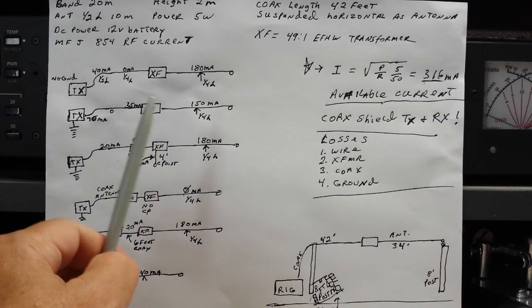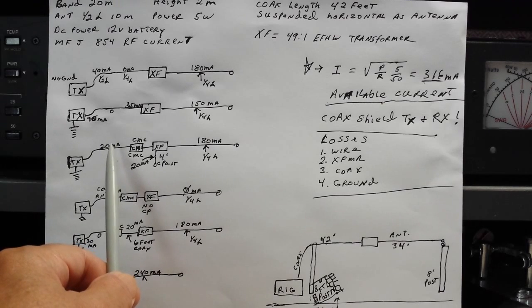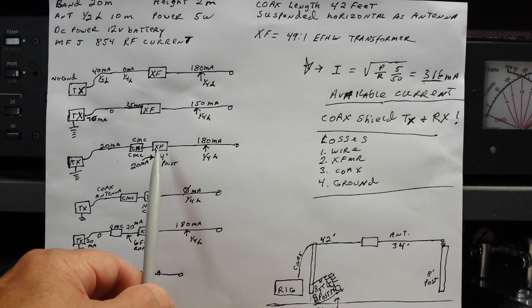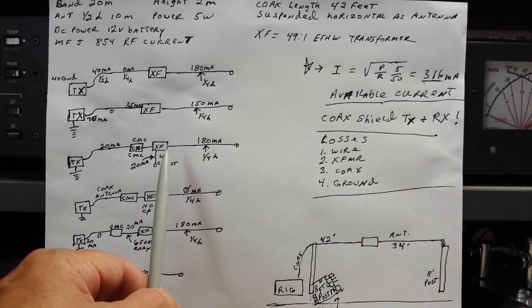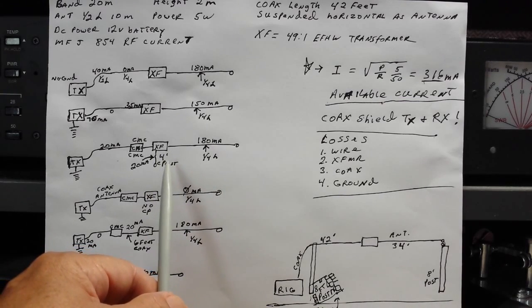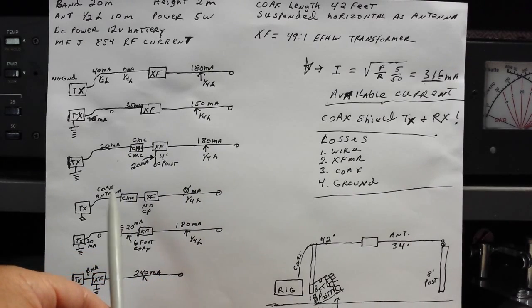We still have 40 milliamps on the total being passed on the counterpoise and the coax together. But we will probably not pick up as much noise because at least half of our coax or counterpoise antenna has moved to this little short piece of wire. Now that's an improvement in that regard. The next experiment was to leave the transmitter grounded, put the choke against the transformer with no counterpoise.